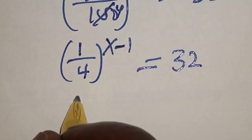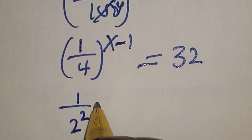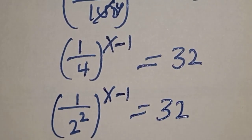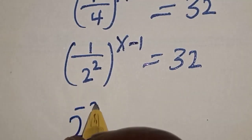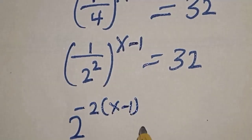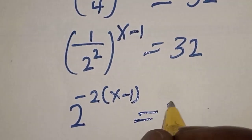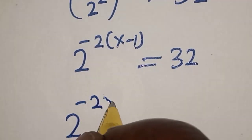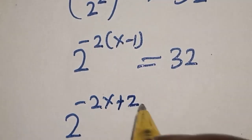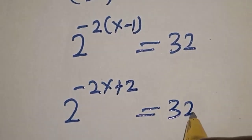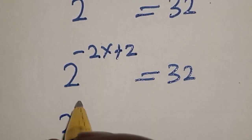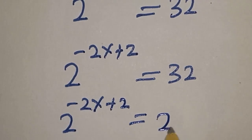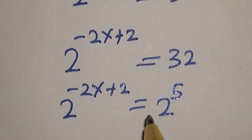This is 1 divided by 2 squared, raised to power s minus 1, is equal to 32. Then this is 2 raised to power minus 2 into s minus 1, is equal to 32. Then this is 2 raised to power minus 2s plus 2, is equal to 2 raised to power 5, because 32 is 2 raised to power 5.